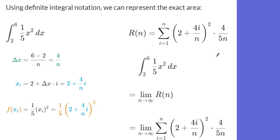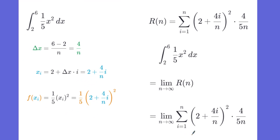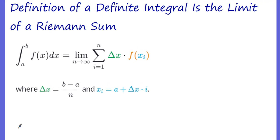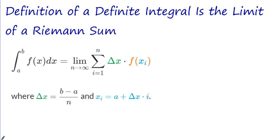That was the right-hand Riemann sum. Which means the definition of our area is the limit as n approaches infinity of the summation from i=1 to n of (2 + 4i/n)² times (4/(5n)). That is the exact area — the definition of a Riemann sum, which is the definition of the definite integral.